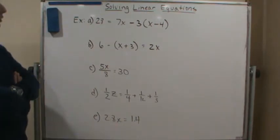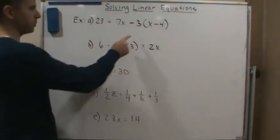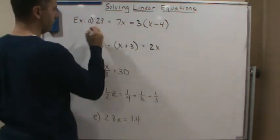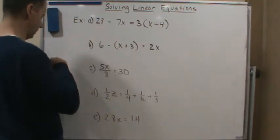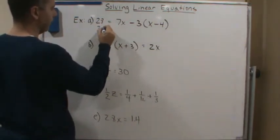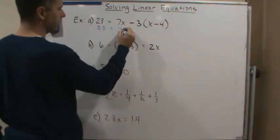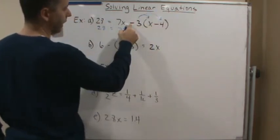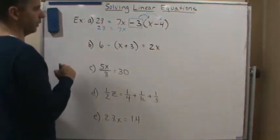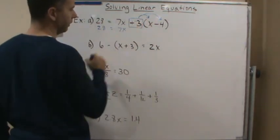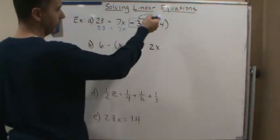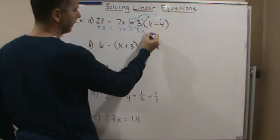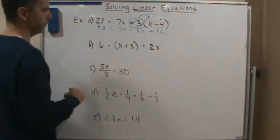Let's look at Part A. The first thing we're going to do is get rid of the parentheses using the distributive property. This becomes 28 equals 7x. Now I'm going to distribute the minus 3 — remember this minus 3 goes with it, or you can change it to a plus negative. The negative 3 goes with it, so this becomes minus 3(3x + 12).